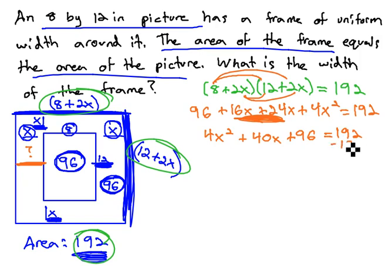The equation needs to equal 0, so we'll subtract 192 from both sides, and we get 4x squared, plus 40x, minus 96, equals 0.